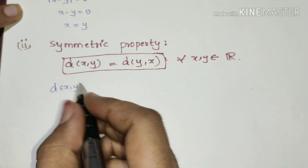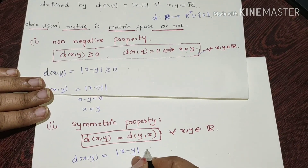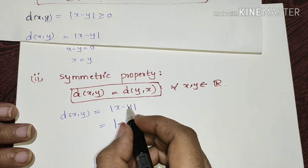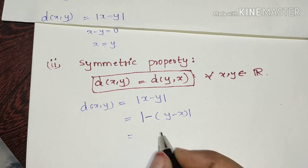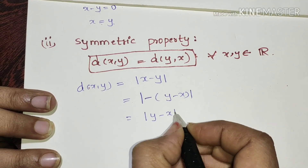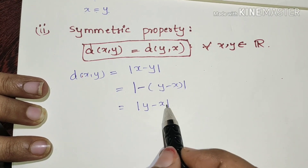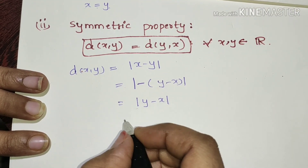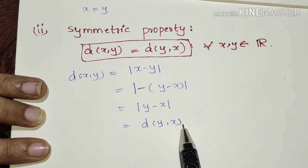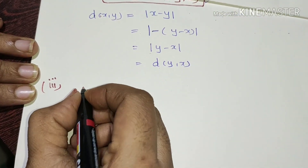For the RHS, the distance of x, y equals modulus of x minus y. We then have minus of x minus y, which equals modulus of y minus x. This is the symmetric property proved.